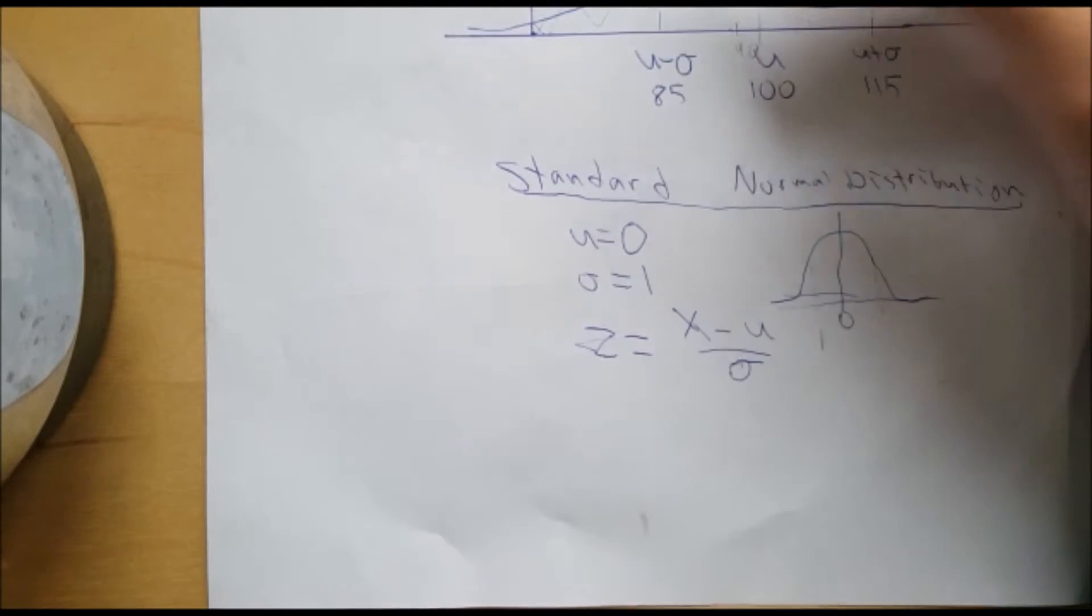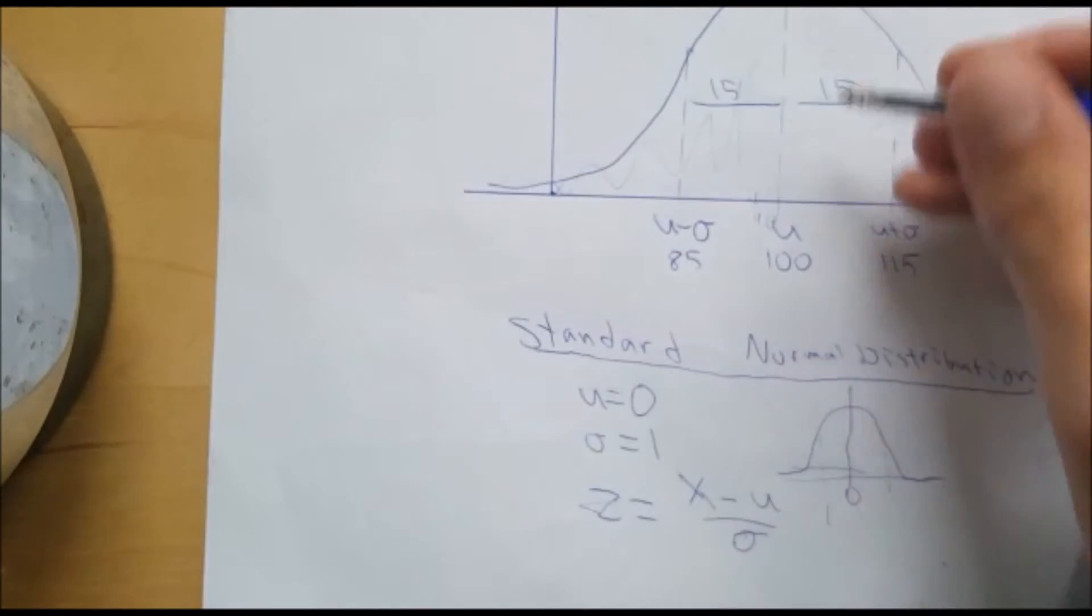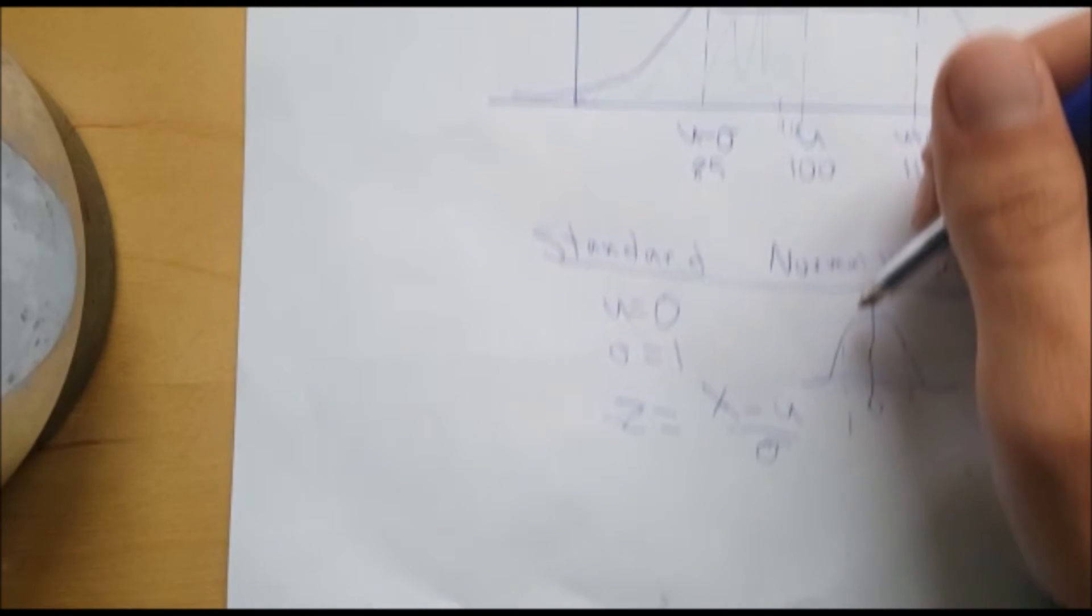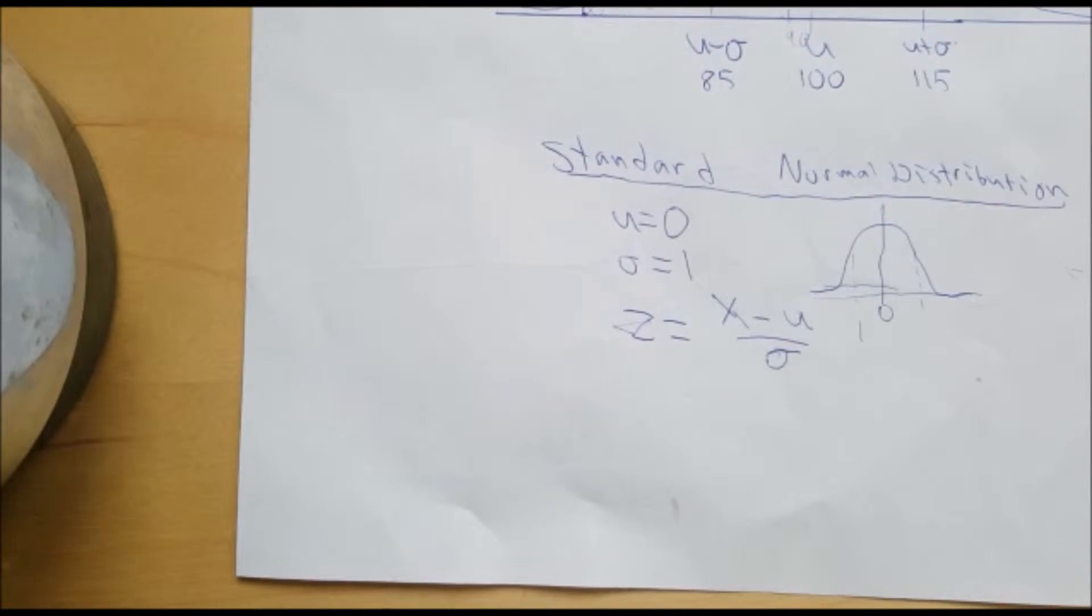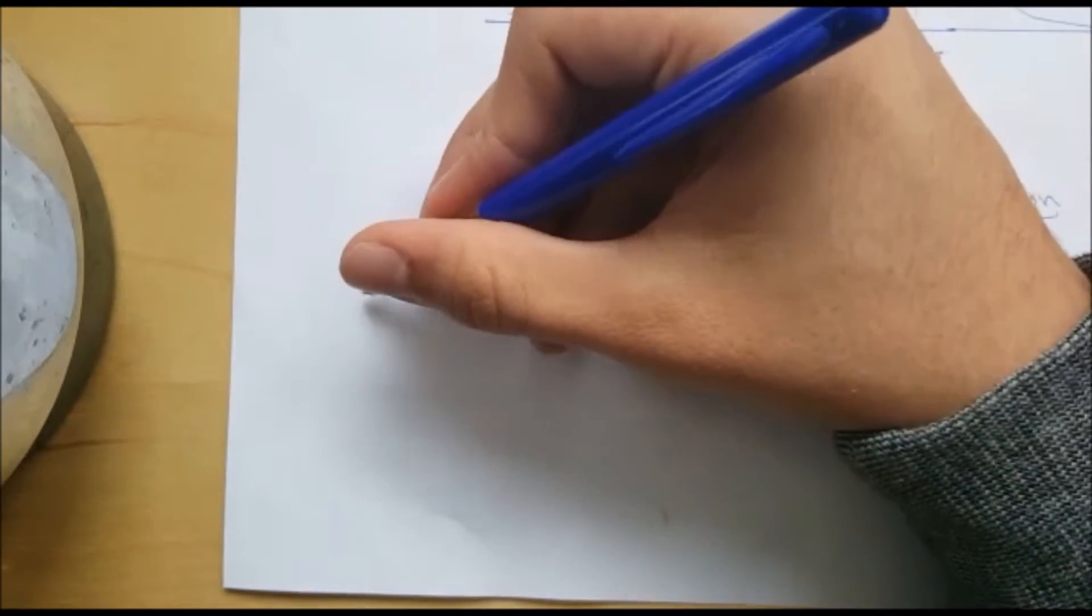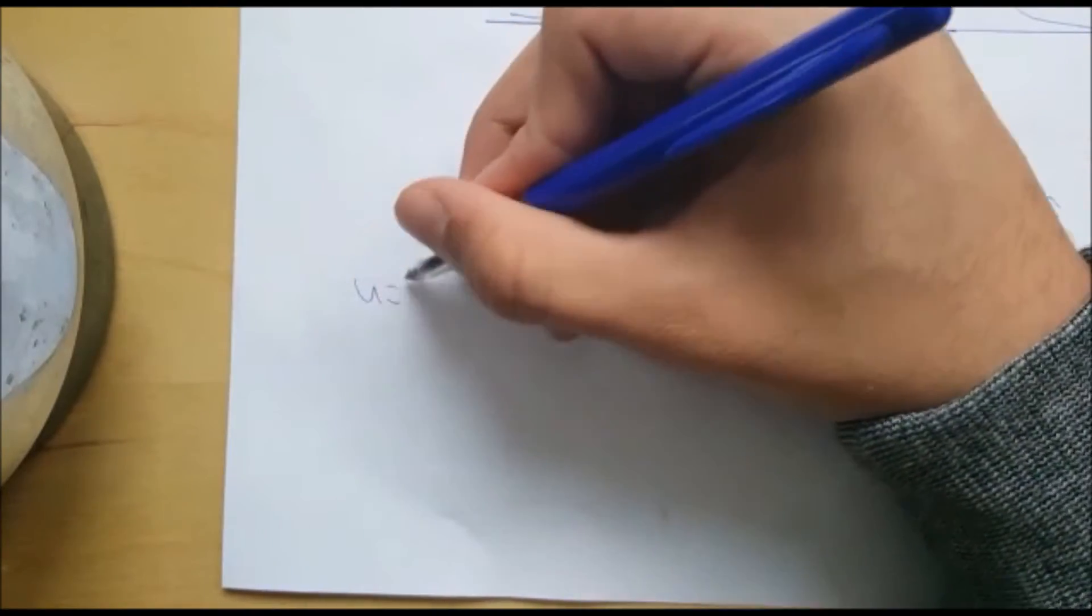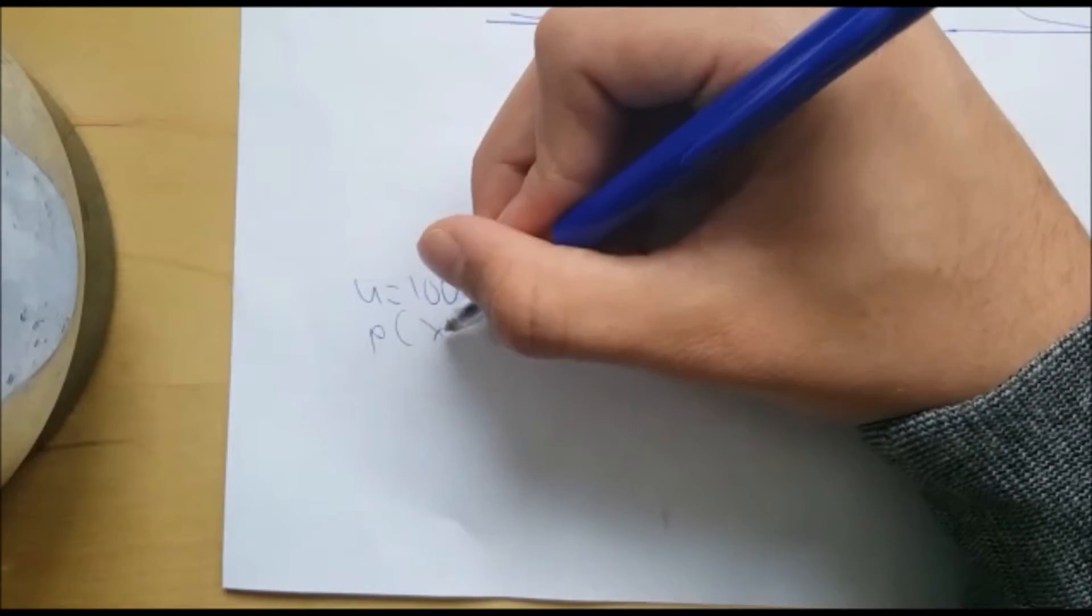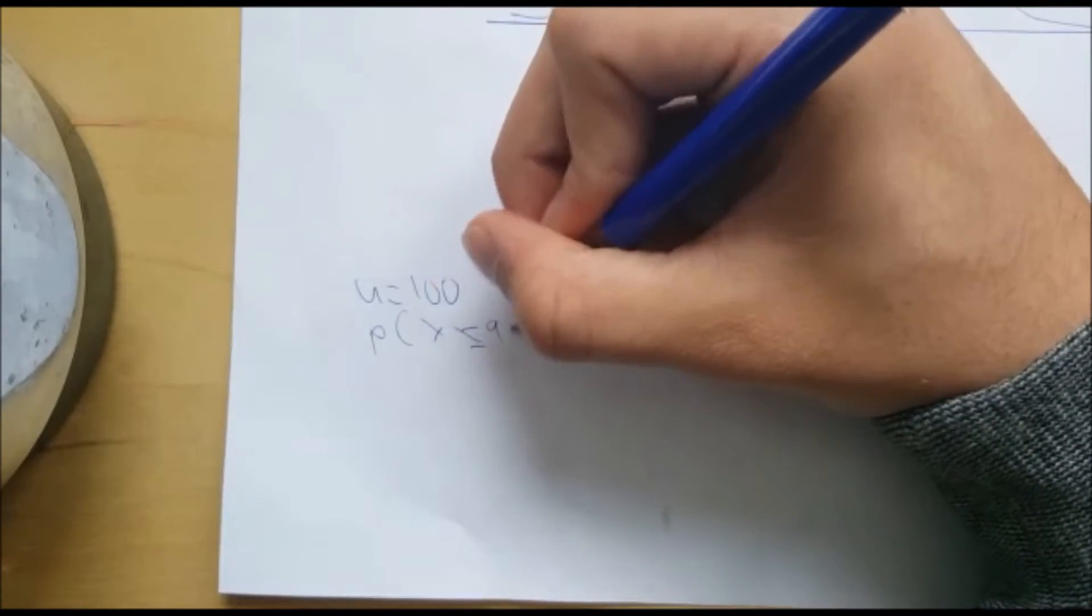Let's say that we don't know that the standard deviation of the IQ distribution curve is 15. I'm going to write down all the things you know. We know mean is 100, and that we know that the probability that a person is 90 or less IQ.